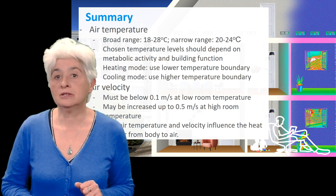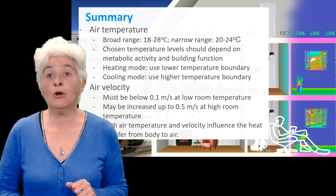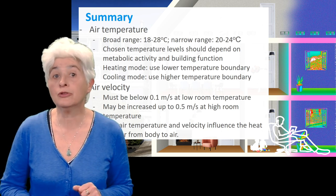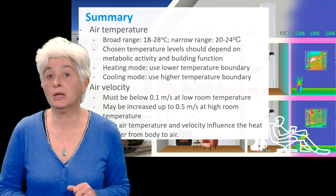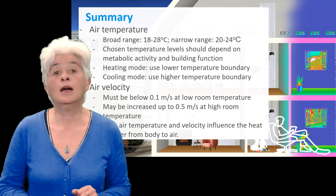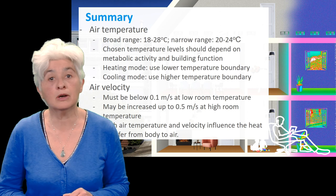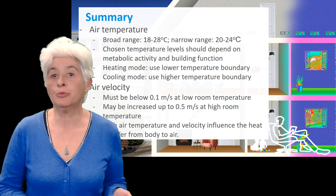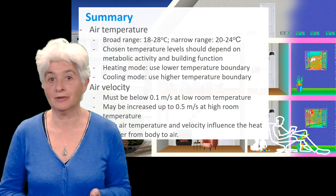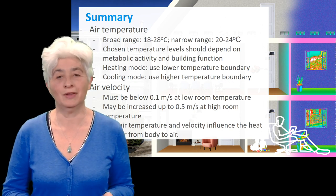During the heating season, it is very important to use the lower boundary of the comfort range, while in the cooling season, the higher boundary should be used to save energy. Air velocities should be reduced below 0.1 meter per second in winter, but can be increased up to 0.5 meter per second in hot conditions. Thank you very much for your attention.